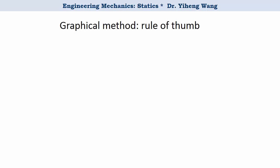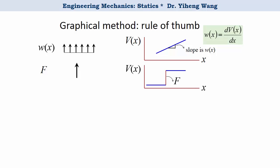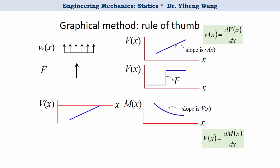As a summary of the graphical method: if there is a distributed load on the member, the load intensity function w corresponds to the slope in the shear force diagram — w(x) = dV/dx. If there is a concentrated load anywhere on the member, there is a corresponding step change in the shear force diagram. The shear force is the slope or derivative of the bending moment function — V(x) = dM/dx — so the slope anywhere on the bending moment diagram corresponds to the shear force value at that location. And an external couple moment applied on the member corresponds to a step change in the bending moment diagram.